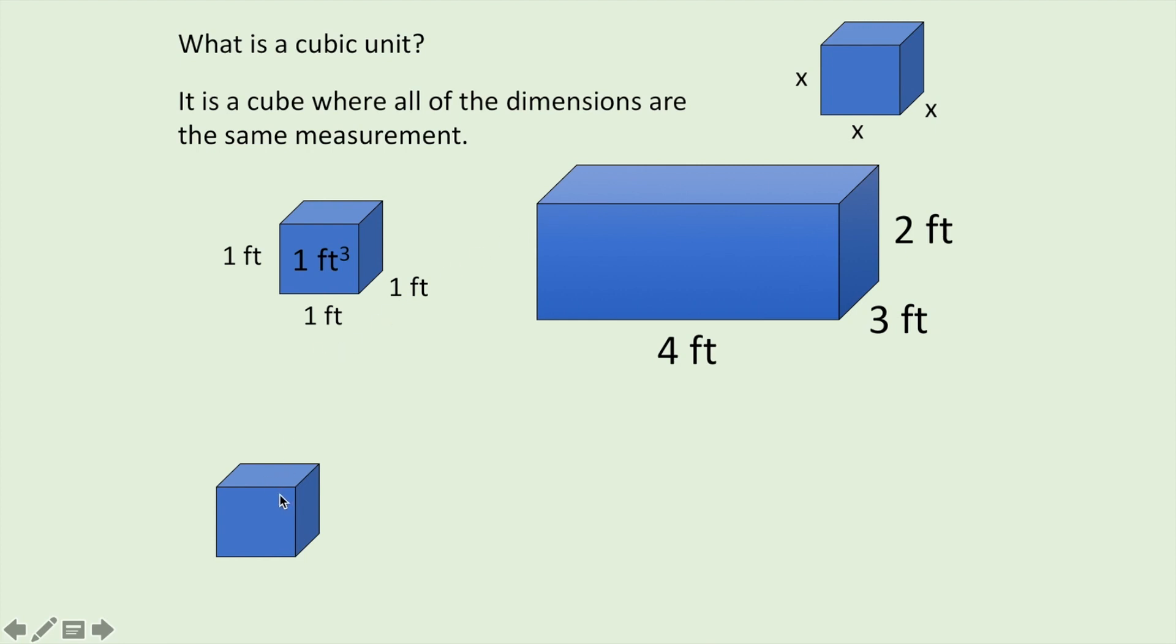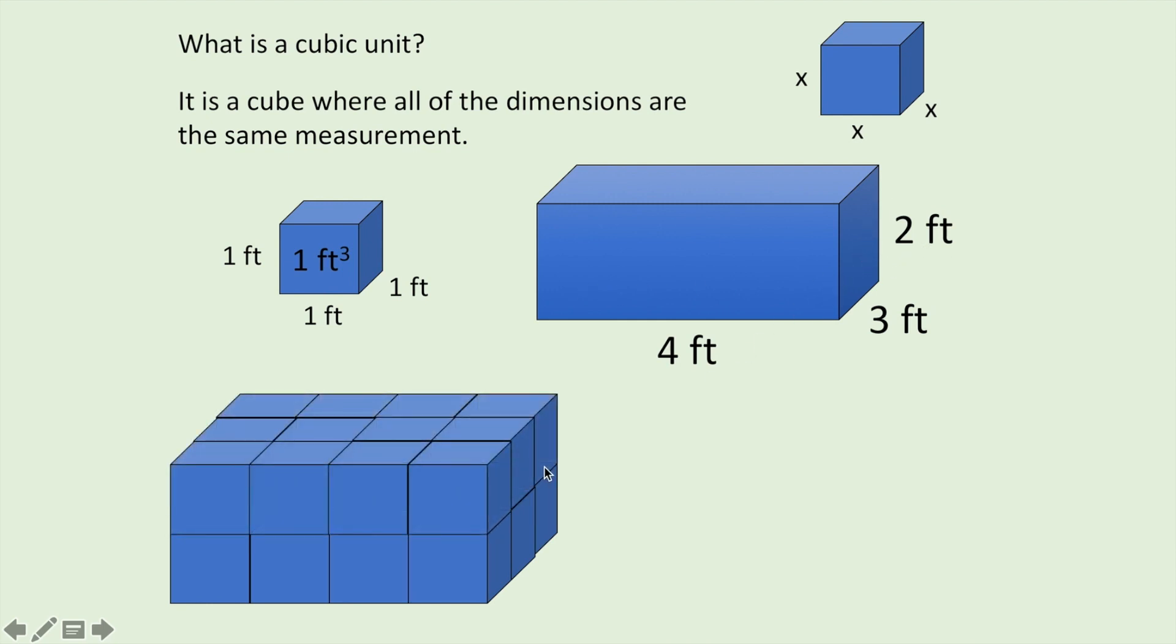So here is one cubic foot. I'm just going to try to figure out how many cubes are going to fit in this. So I'm going to put one cubic foot, second one, third one, fourth one. I've got to put four in a row. That covers the bottom, four cubic feet. But then I'm going to put another row in front of it, and then another row in front of that. That's how many cubes fit on the bottom row. And then it's two feet high, so it's like two cubes high.